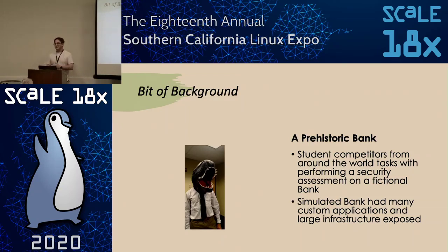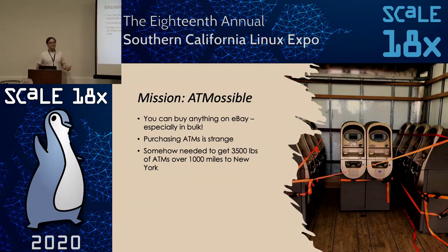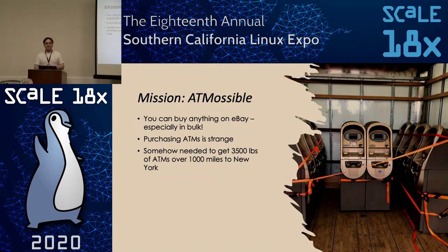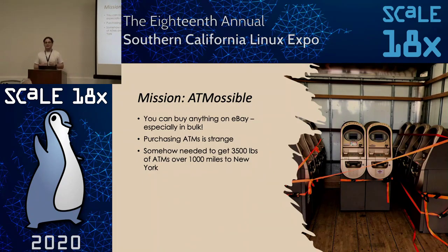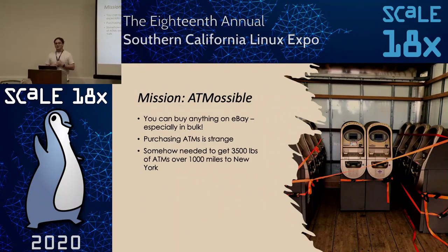It turns out you can go on eBay and buy pretty much anything — voting machines, ATMs, payphones. We found the deal of a lifetime: for less than $500 we could get 12 fully functional ATMs. The only thing we had to do was pay for shipping. Good news: you can rent a truck. And so an adventure started.